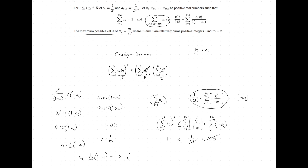Checking the final arithmetic: 215 is not divisible by 3 because 2+1+5 = 8, which is not divisible by 3, so m and n are relatively prime. Our final answer is 863.